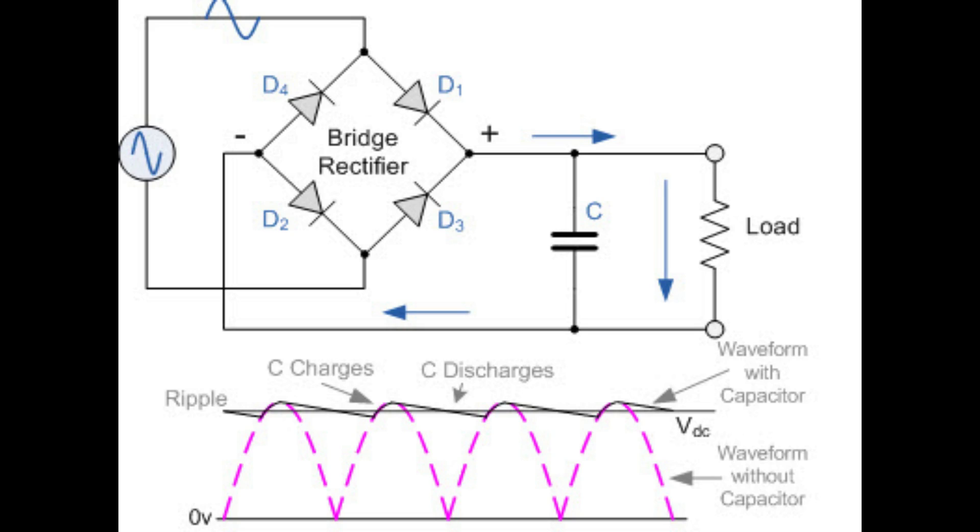When the AC is going positive, diode D1, load R, and diode D2 will be conducting. When the AC goes negative, the other two diodes will be conducting, but current through the load will always be unidirectional. That is DC. So this is called full-wave bridge rectifier.